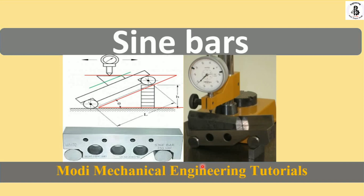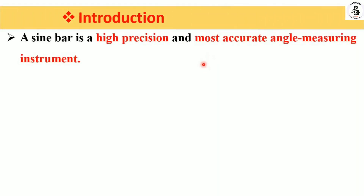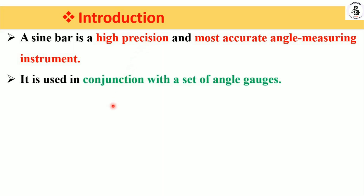Welcome to Modi Mechanical Engineering Tutorials. In this video I will be explaining in detail about a sine bar. The sine bar is used for measuring — an indirect kind of angular measurement. It is a highly precise and accurate angle measuring instrument for any kind of component, and it is also used in conjunction with different sets of angle gauges for measuring different varieties of angles.